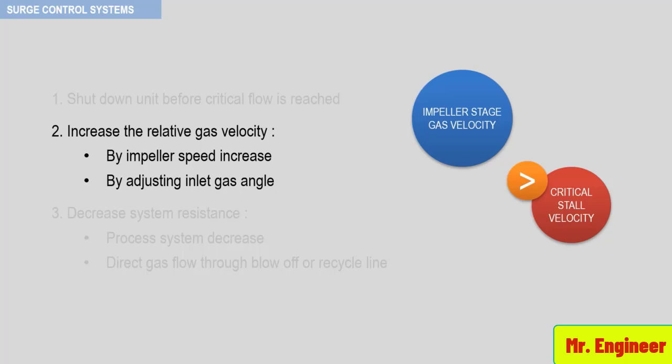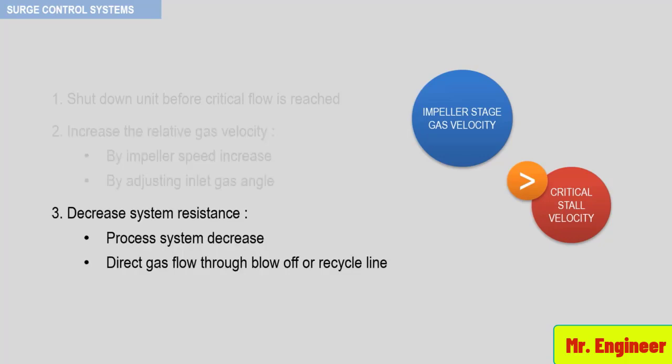The third option of decreasing the system resistance can be achieved by either directly reducing process system resistance, as seen in a previous video, or by opening a throttle valve, or by directing gas flow through a blow-off or a recycle line.